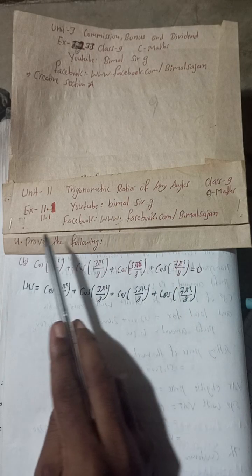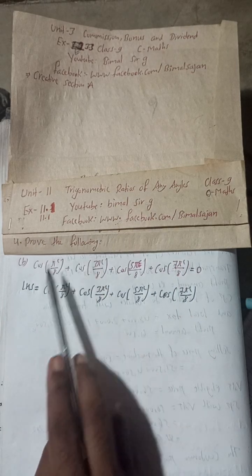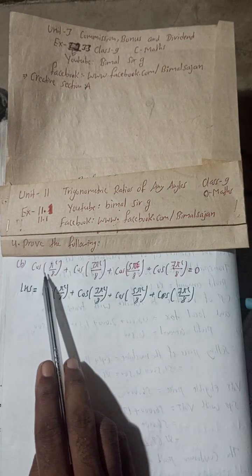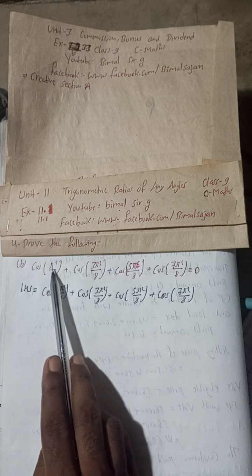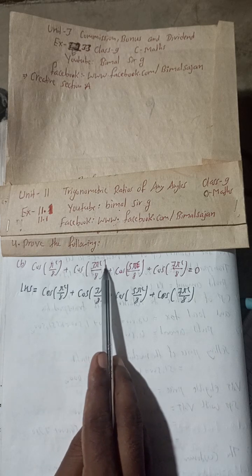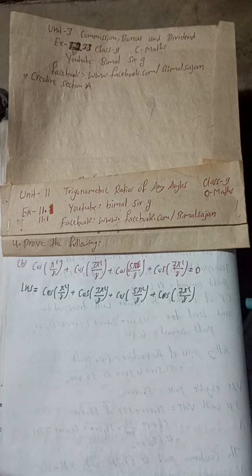Let's begin the solution now. Prove the following: cos π/8 + cos 3π/8 + cos 5π/8.